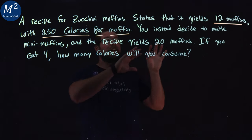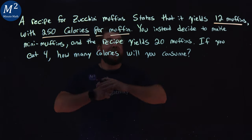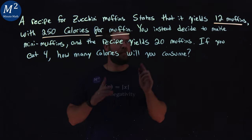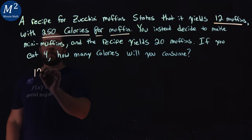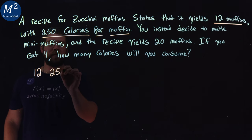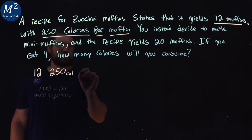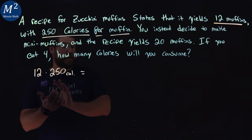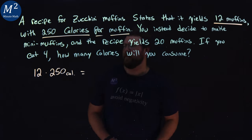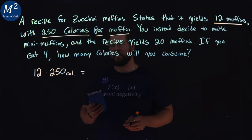What we're going to do is take that information and see how many calories are in the whole yield — the whole recipe. So I'm going to take those 12 muffins and multiply it by 250 calories. Each muffin is 250 calories, we've got 12 of them. I believe that's 3000, but I'll just double check because I would hate to get the whole problem wrong.